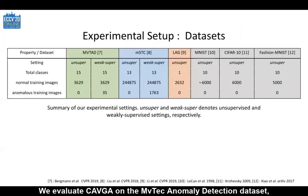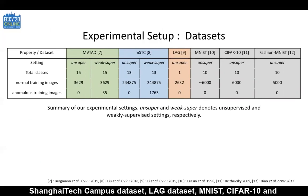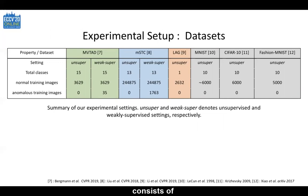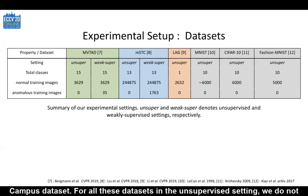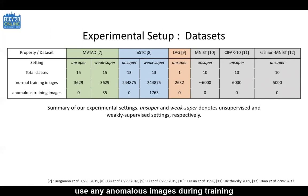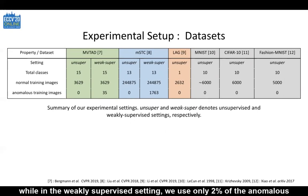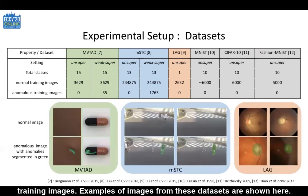We evaluate CAVGA on the MVTEC anomaly detection dataset, Shanghai Tech Campus dataset, LAG dataset, MNIST, CIFAR-10, and FASHION-MNIST dataset. Since the Shanghai Tech Campus dataset consists of videos and we address image-based anomaly localization, we take every fifth frame of the video to create a modified Shanghai Tech Campus dataset. For all these datasets in the unsupervised setting, we do not use any anomalous images during training, while in the weakly supervised setting, we use only 2% of the anomalous training images. Examples of images from these datasets are shown here.